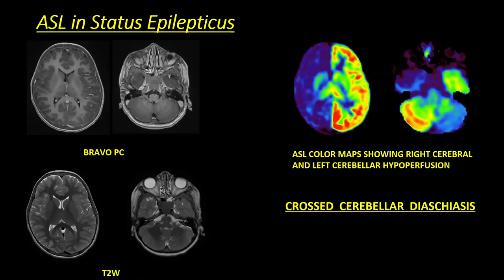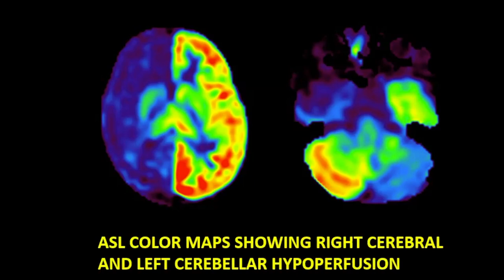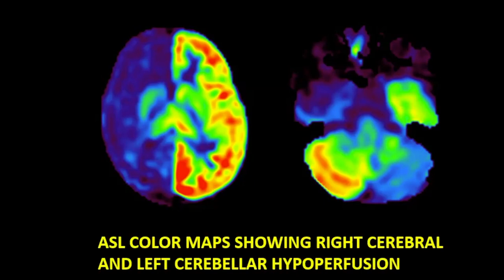Another interesting example: a 22-year-old who came with an episode of seizure. Post-contrast images as well as routine T2-weighted images do not show any obvious abnormality. However, on the ASL color map, there is clear hypoperfusion in the right cerebral hemisphere. At the same time, we see hypoperfusion in the contralateral cerebellar hemisphere as well. This brings us to the interesting phenomenon of crossed cerebellar diaschisis.